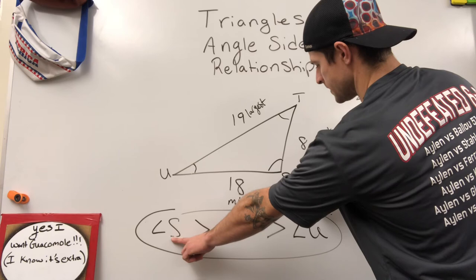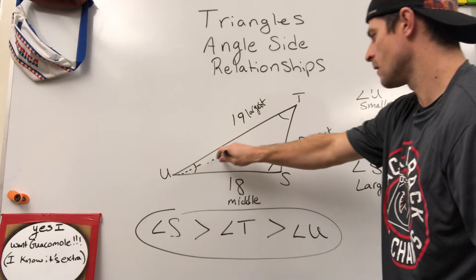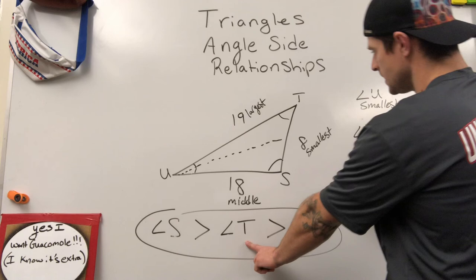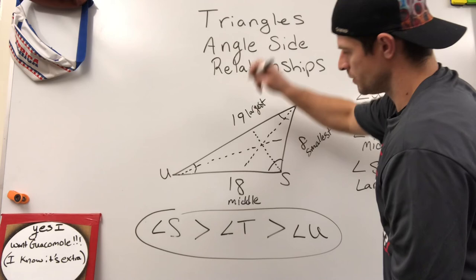So we got our largest angle being S, our middle angle being T, and our smallest angle being U. Now watch as we go across the board. Smallest angle being U goes to my smallest side. Middle angle being T, go across the triangle, that's my middle side. And then my largest side length and my largest angle would be opposite of one another.